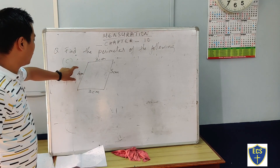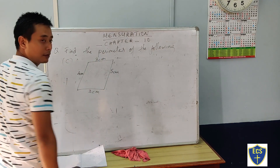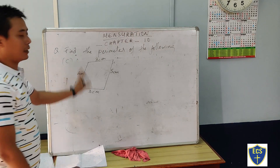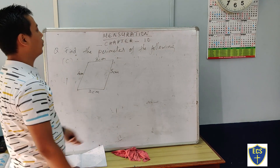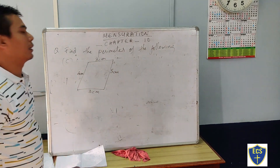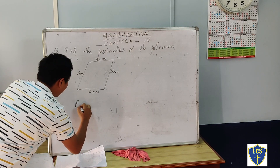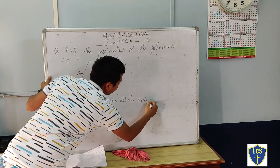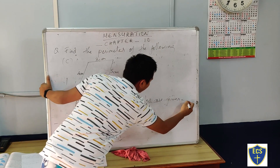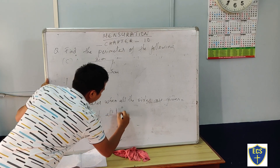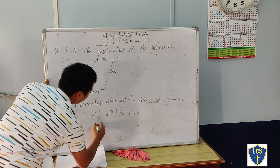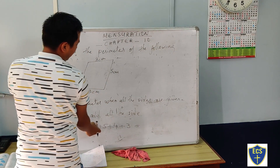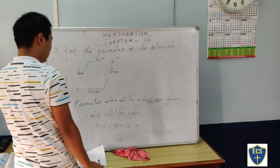The next question has a figure where all side measurements are given: this side is 3 cm, this side is 5 cm, this side is 3 cm, and this side is 4 cm. All sides are given, so we add all the sides: 3 plus 5 plus 4 plus 3. That equals 15 cm.